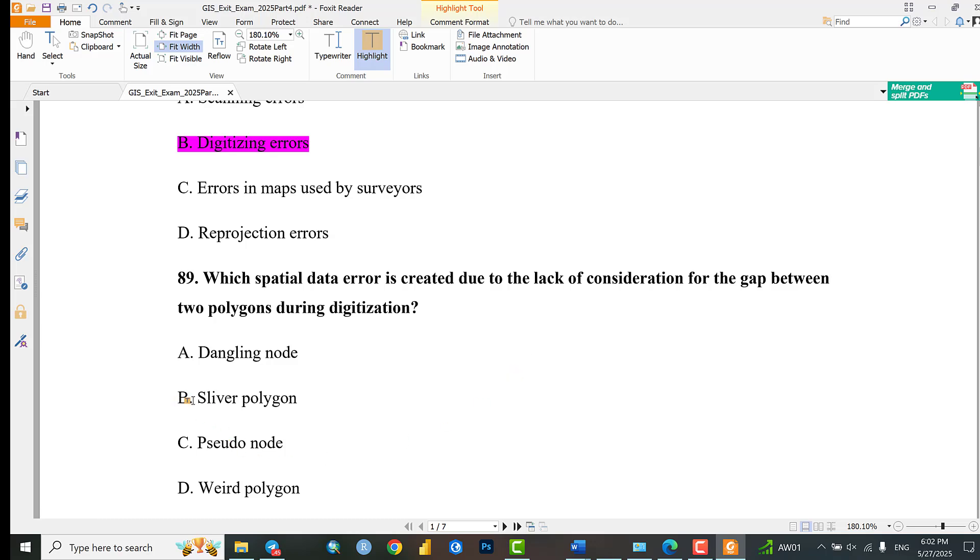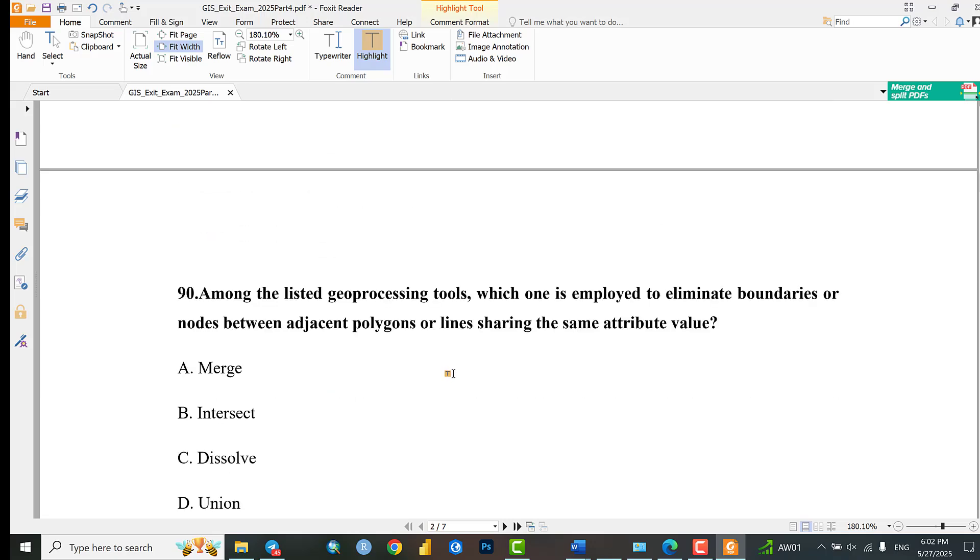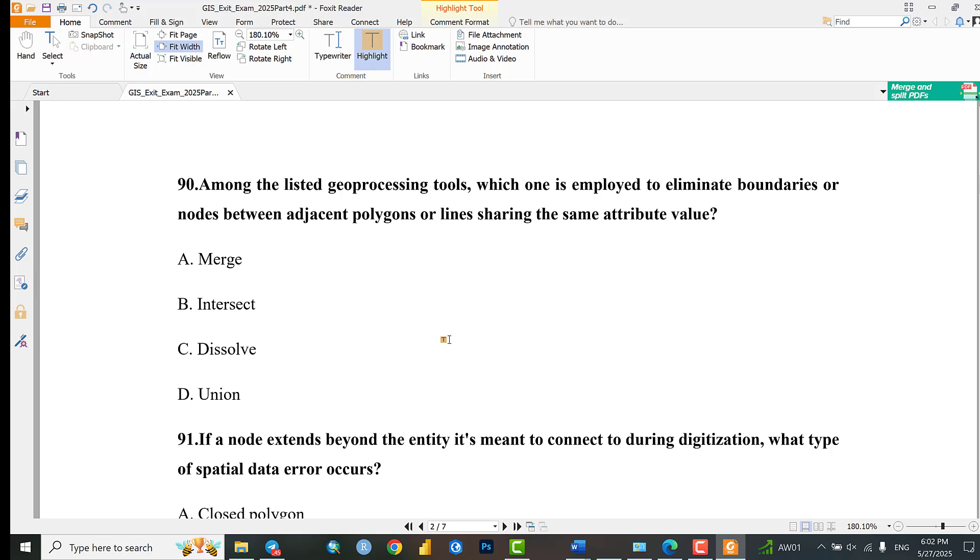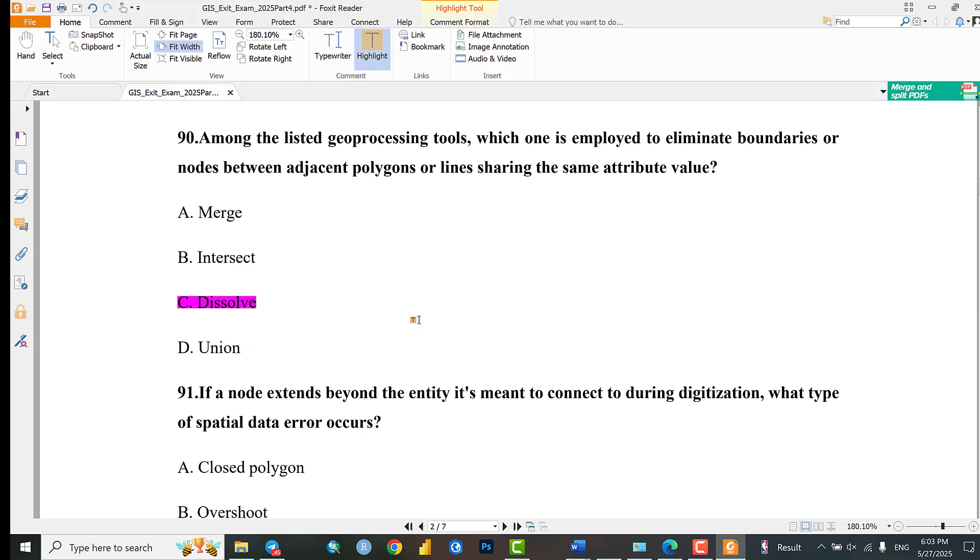Question 90: Among the listed data processing tools, which one is employed to eliminate boundaries or noise between adjacent polygons or lines sharing the same attribute value? Options include intersect, C: Dissolve, D: Union. The answer is C: Dissolve.